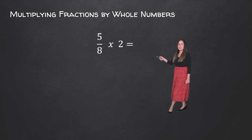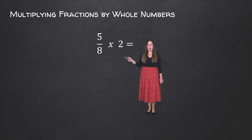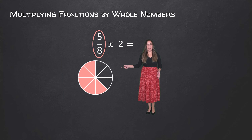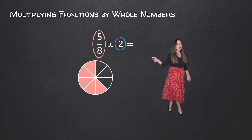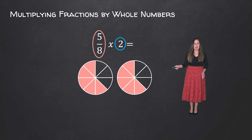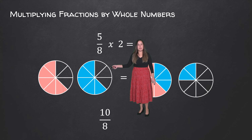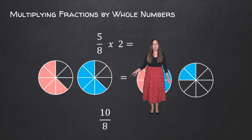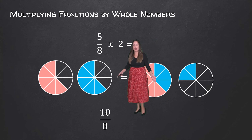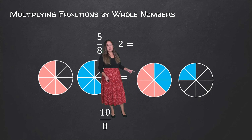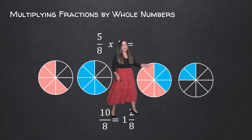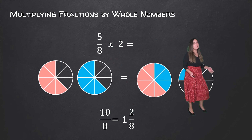For our final example, we have 5 over 8 times 2. First we'll represent 5 out of 8 — we have 5 shaded parts out of 8 equal pieces — and because we're multiplying by 2, we're going to represent it 2 times. So we have 5 eighths represented 2 times, which is the same thing as 10 over 8, because we have 10 parts shaded out of 8. Combining them, we have one whole circle shaded plus another 2 parts, giving us 1 and 2 eighths.